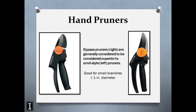Some hand pruners — here are some Fiskars. Bypass loppers are generally considered superior to anvil-style pruners. Anvil-style pruners tend to crush the cells and tissue, whereas bypass pruners make a more precise cut through the wood. If you have your choice, always pick bypass pruners over anvil-style. Hand pruners are optimum for stem diameters up to one inch.